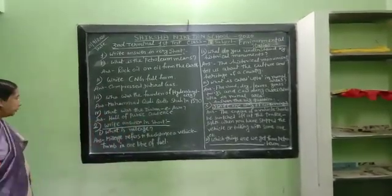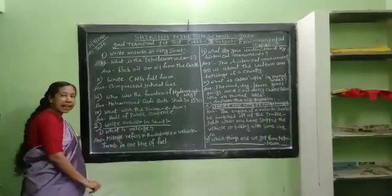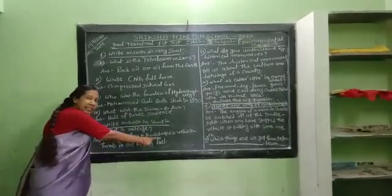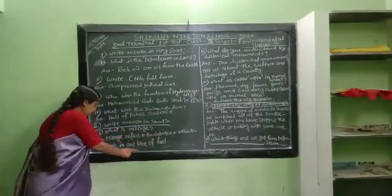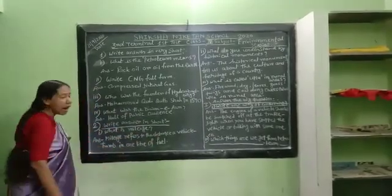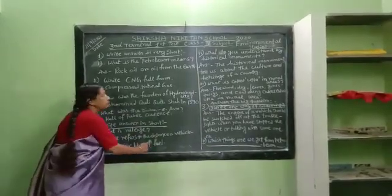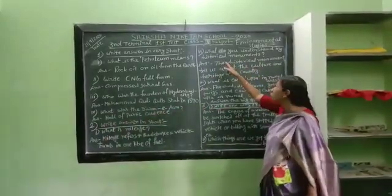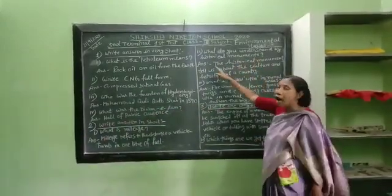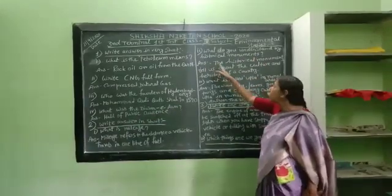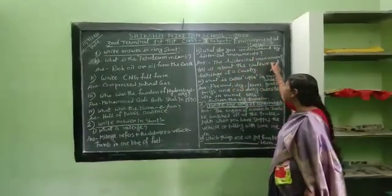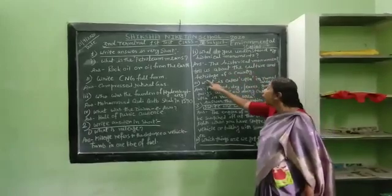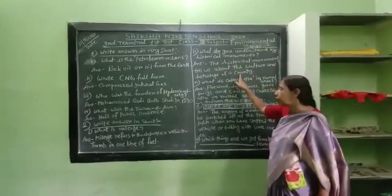Answer in short. What is mileage? Mileage refers to the distance a vehicle travels in one litre of fuel. What do you understand by historical monuments? Answer: Historical monuments tell us about the culture and heritage of a country.